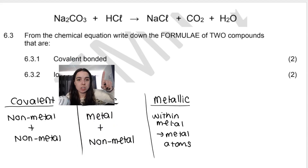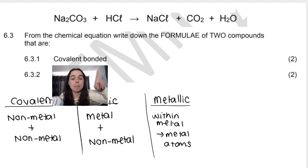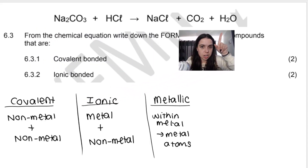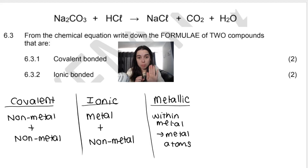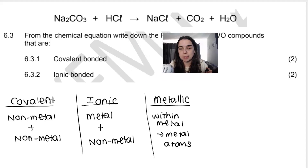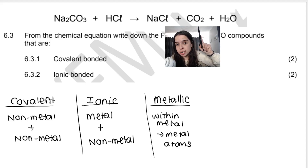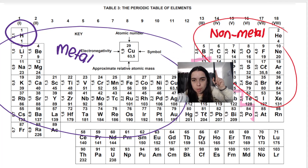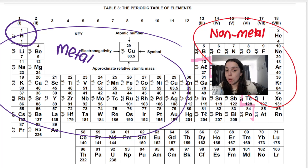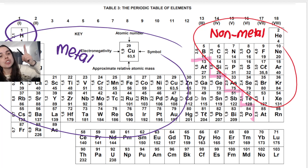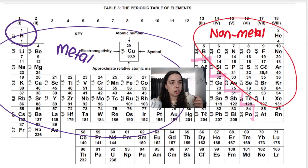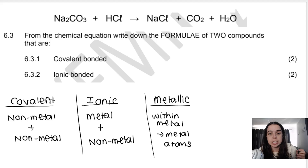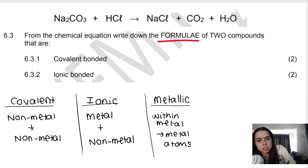So which compounds are covalently bonded? We need to look for one that contains a non-metal and a non-metal. Immediately you should be able to tell me that CO2 is covalently bonded because carbon is a non-metal and oxygen is a non-metal — you can confirm by looking at where they sit on the periodic table. A second compound would be water: H2O contains oxygen, a non-metal, and hydrogen, which is also a non-metal. So CO2 and H2O are your covalently bonded compounds.